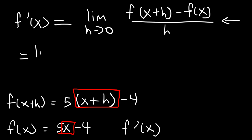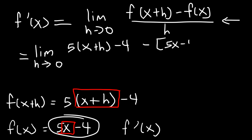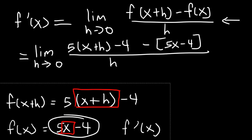So it's going to be the limit as h approaches 0 and then it's going to be 5 times x plus h minus 4, and then minus f of x which is 5x minus 4, and we're going to divide all of this by h.